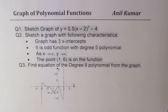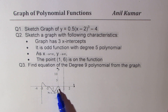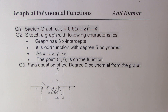Question number three is to find the equation of a degree 9 polynomial from the given graph. In this particular graph, we have zeros at minus 3, minus 2, 0, and 1. You have to find the degree 9 equation. You can actually pause the video, answer these questions, and then look into my suggestions.